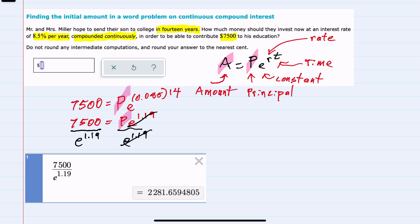And since I'm not supposed to do any intermediate computations, I plug this expression directly into Desmos. And rounding to the nearest cent, I can see that that place value has a 9 behind it, so I will round up. So the principal of $2,281.66 is the amount that the Millers would want to start with to be able to compound for 14 years and end up with the $7,500.